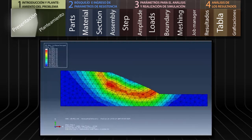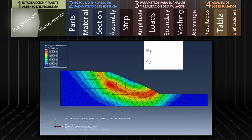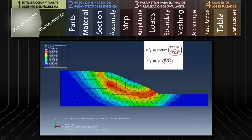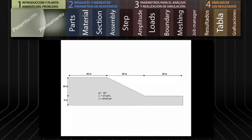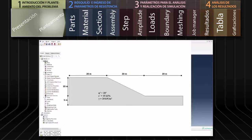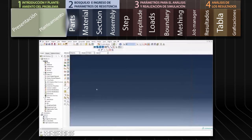El factor de seguridad es definido como el número por el cual deben ser reducidos los parámetros de resistencia originales para que el talud falle. En este caso estimaremos el factor de seguridad para el talud que se muestra en pantalla. Inicialmente modelaremos el talud con los parámetros de resistencia originales.